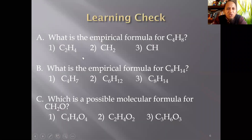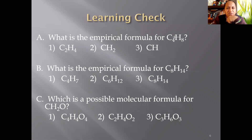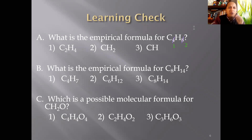Let's solve an example. What is the empirical formula for C4H8? Cancel to the smallest ratio: 4÷4=1 for carbon, and 8÷4=2 for hydrogen. So the empirical formula is CH2. You find the smallest ratio and enclose that as your answer.